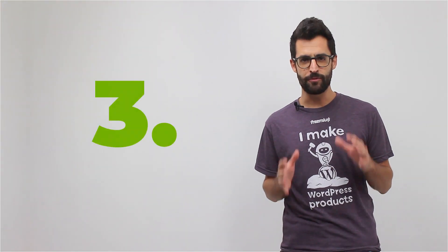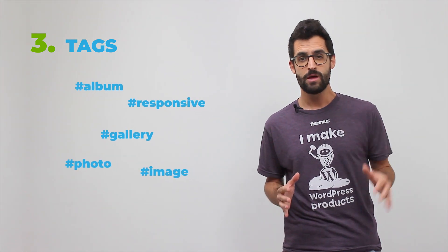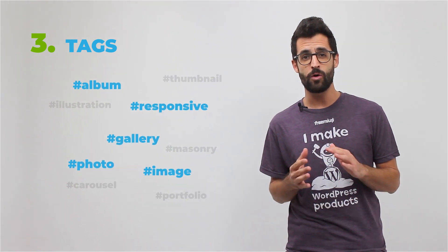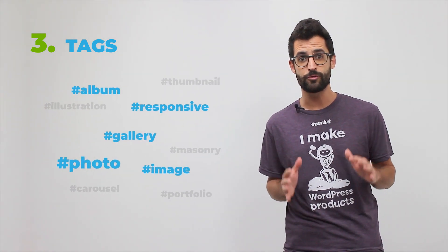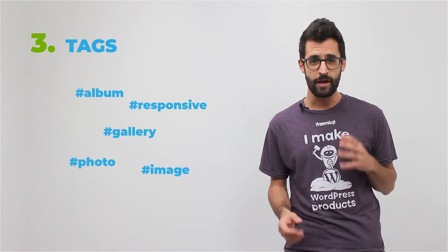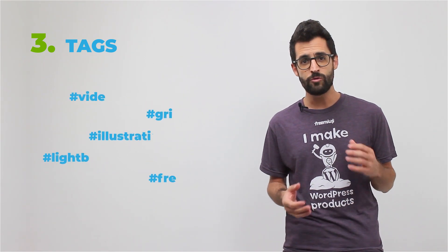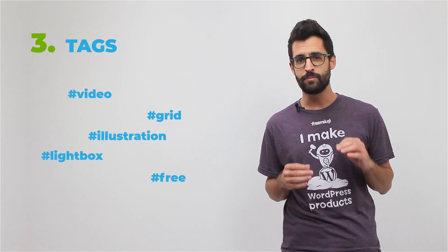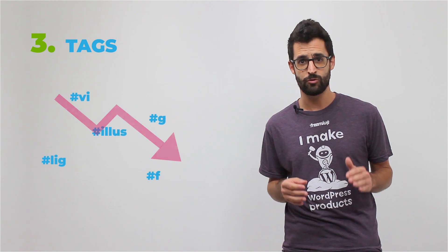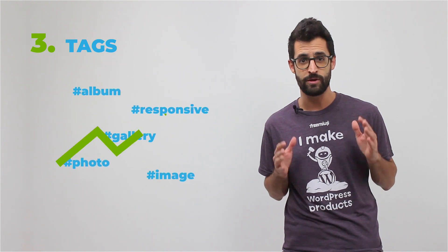Factor number three: tags. Choose tags wisely. The search algorithm limits the number of tags for each product to only five. If you specify more than five in your readme file, the algorithm will only take into consideration the first five. You can also do some experimentation and change the tags every few months to see if it makes a difference for your rankings. But be careful — you want to rely on keyword research and testing to make sure they're the best tags to be using.